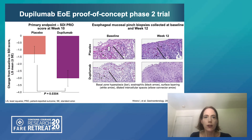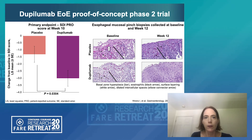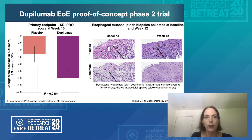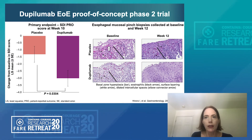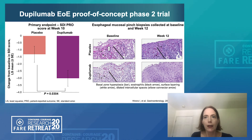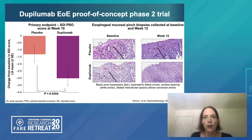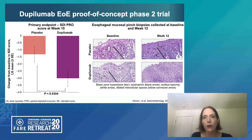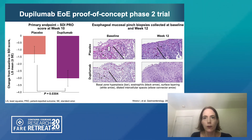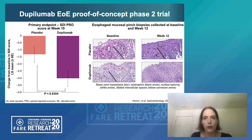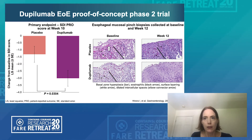This slide shows both the dysphagia improvement as appreciated by the SDI PRO and the histologic improvement. For dupilumab at week 12, you can appreciate less basal zone hyperplasia in the lower far right panel. There's also a reduction in intracellular spaces and a marked reduction in the number of eosinophils comparing baseline to week 12. The dupilumab patients are in the bottom two panels, and the placebo-treated patients are in the top two histologic panels.